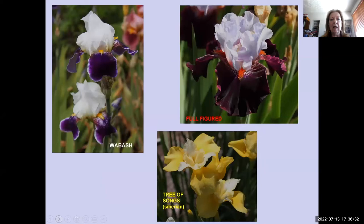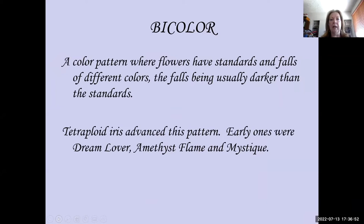These are more amoenas: Wabash, a historic on the left; a Siberian amoena called Tree of Songs, where the standards are white and the falls are yellow or gold. Bicolor iris is a color pattern where the flowers have standards and falls of different colors — the falls being usually darker than the standards, but 'usually' is one of those words that isn't always. Tetraploid iris advanced this pattern. Early ones were Dream Lover, Amethyst Flame, and Mystique, all Dykes Medal winners.